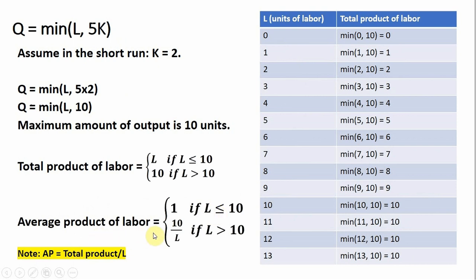Average product of labor will be 1 for any value of L less than or equal to 10. The average product of labor will be 10 divided by L when the number of workers exceeds 10 — we're simply taking 10 and dividing it by L. So if we have 10 units of output from 12 workers, the average product of labor will be 10 divided by 12, and so on.